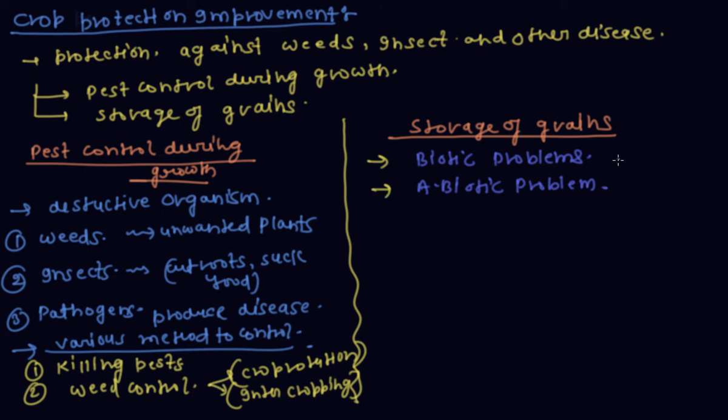Biotic problems are due to living organisms like insects, birds, mites, and bacteria. Abiotic problems are due to non-living factors such as moisture and inappropriate temperature.